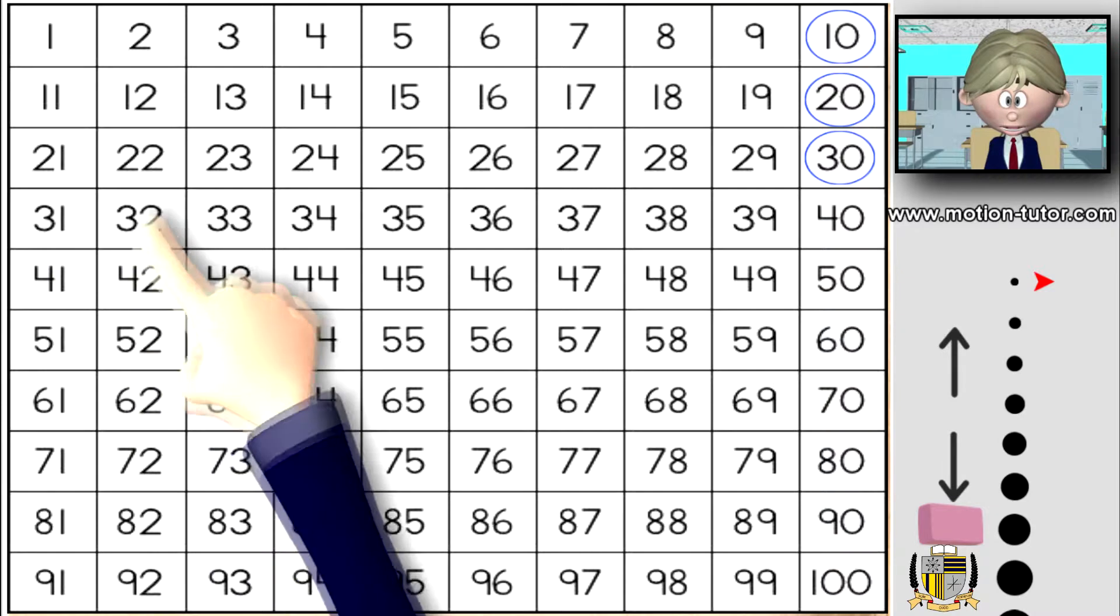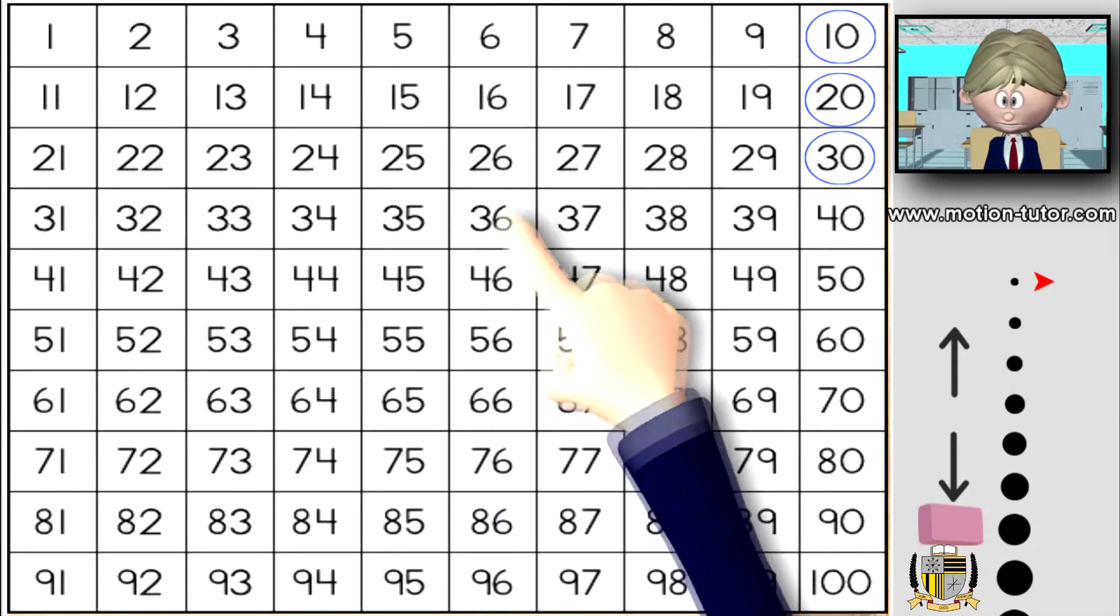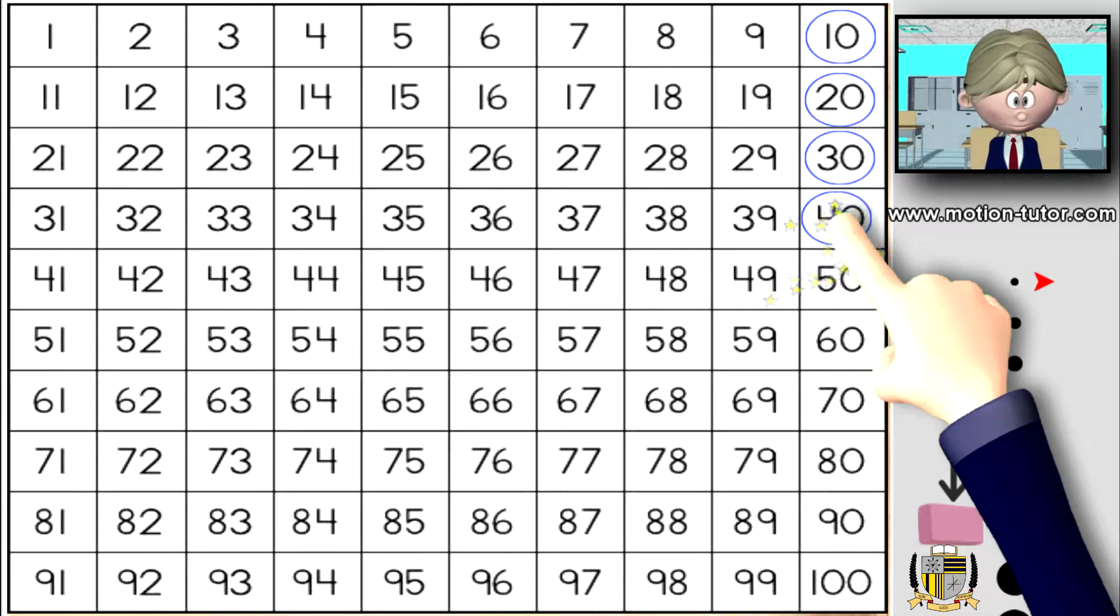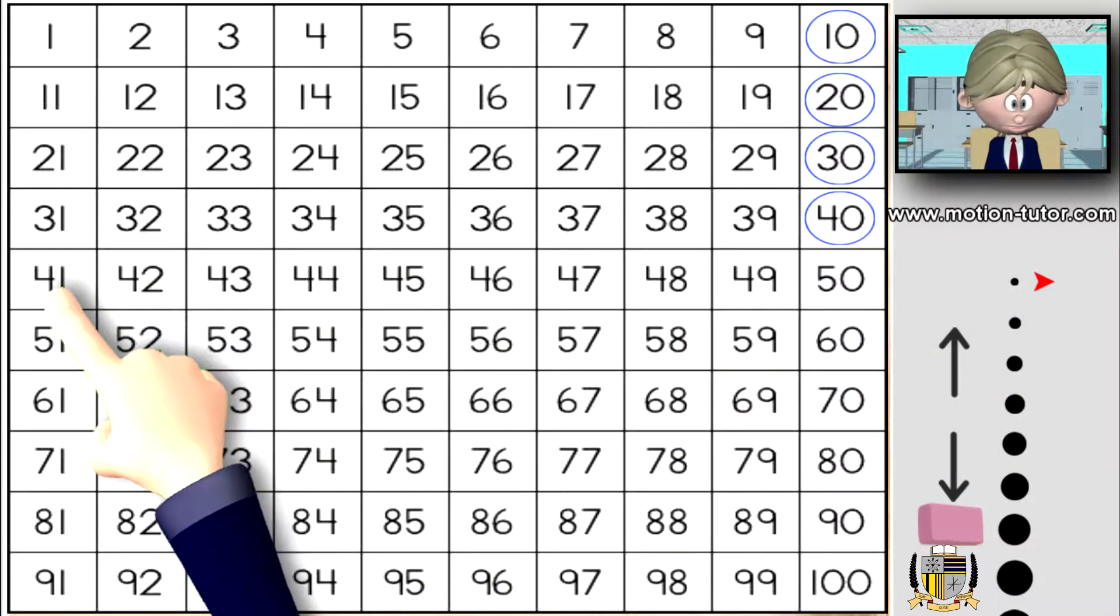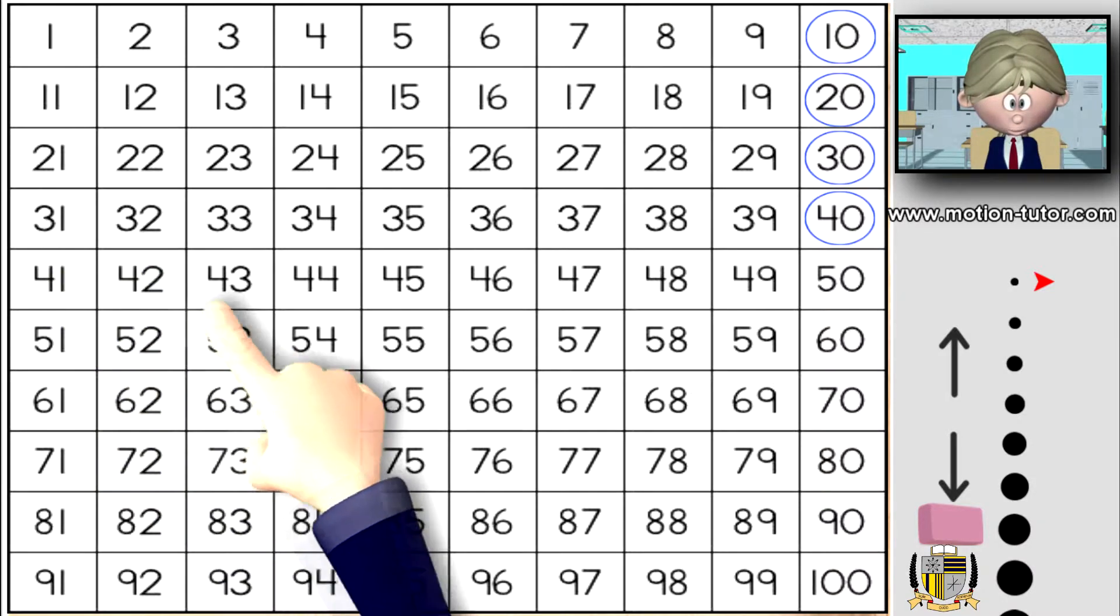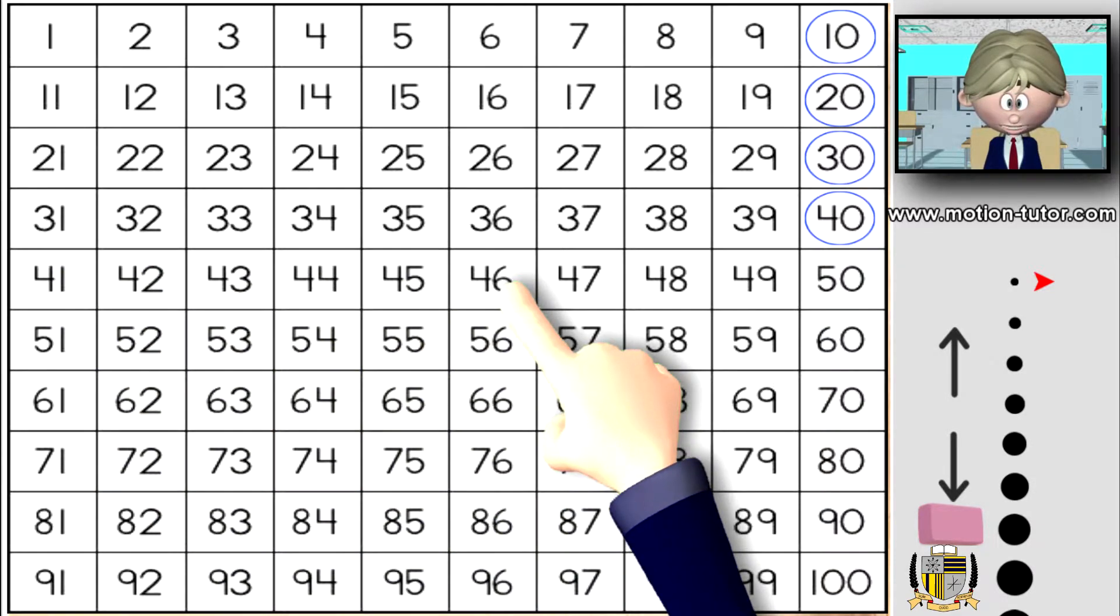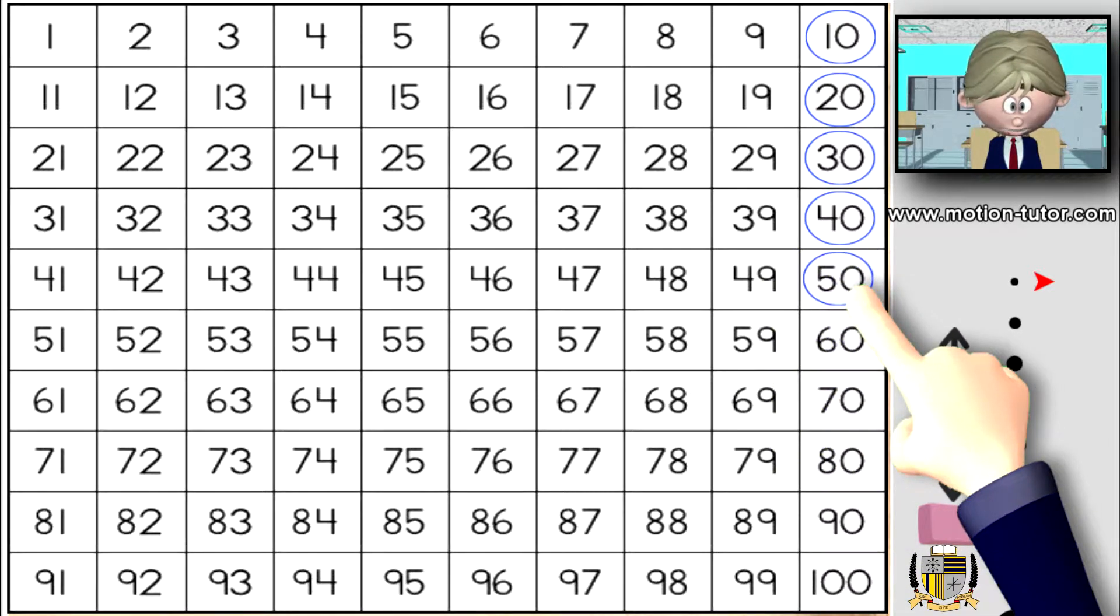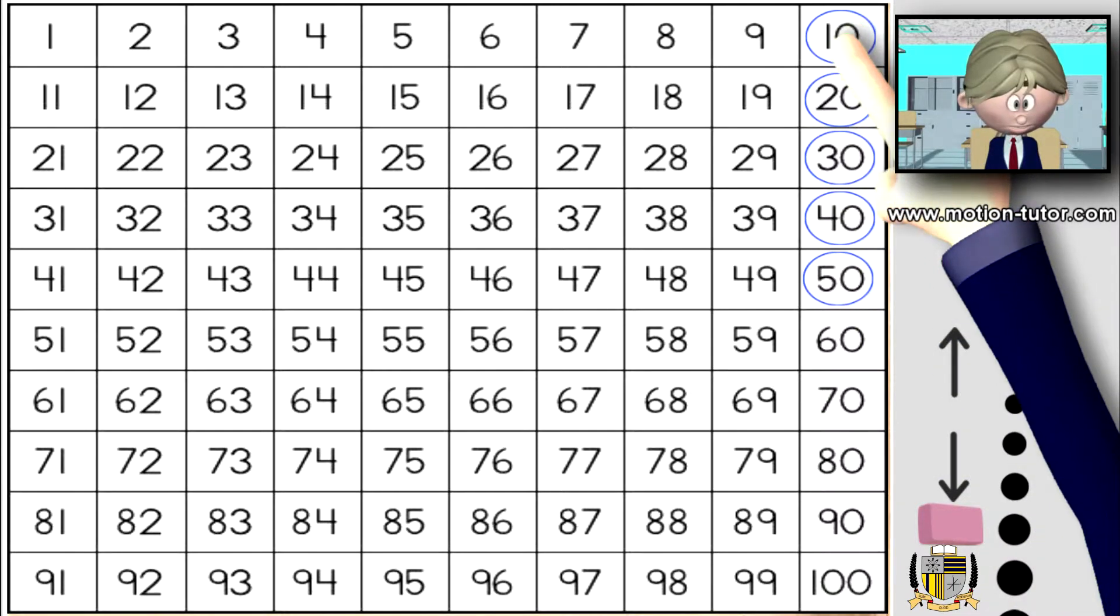Another 10: one, two, three, four, five, six, seven, eight, nine, ten. Another 10, let's count another 10: one, two, three, four, five, six, seven, eight, nine, ten - and we're at 50. So to count by 10, we start from...